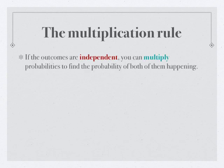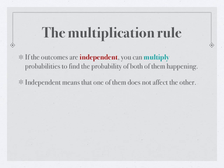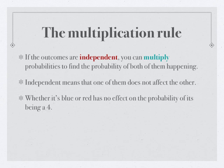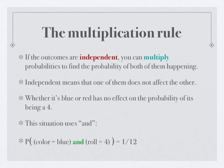If the outcomes are independent, you can multiply probabilities to find the probability of both of them happening. Independent means one of them does not affect the other. The fact that it's blue has no effect on the probability of it being a four. It's one-sixth probability whether it's blue or red. This situation uses the word and. Remember how the last one was or? This one uses and. The probability of the color is blue and the roll is four is one in twelve.